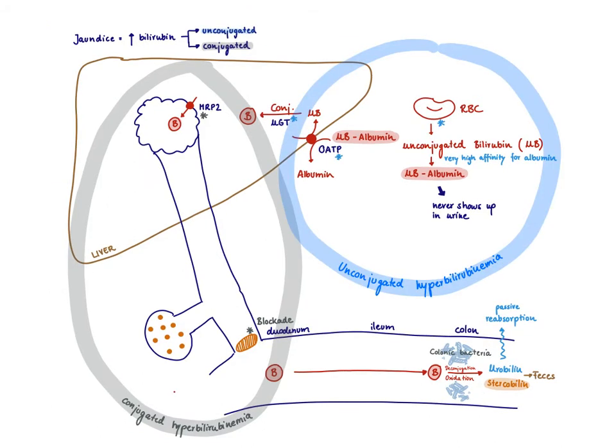Now just to summarize, if you have hyperbilirubinemia, you have to first figure out does it come from too much unconjugated or too much conjugated bilirubin. If it is unconjugated, it needs to be before you have the conjugated form of bilirubin. If you have conjugated hyperbilirubinemia, it needs to happen afterwards, some defect afterwards.